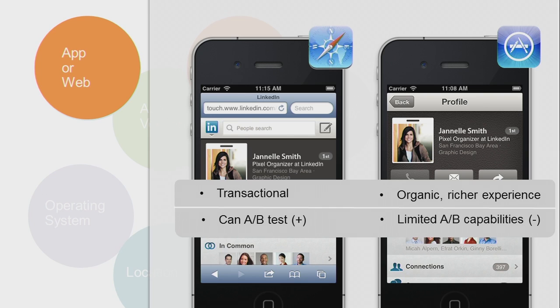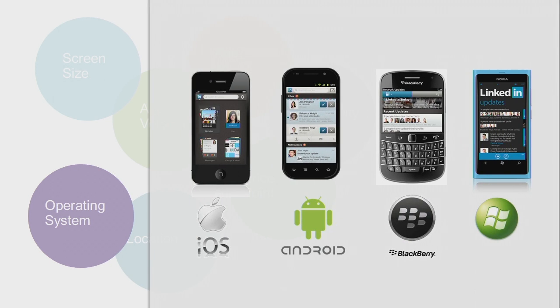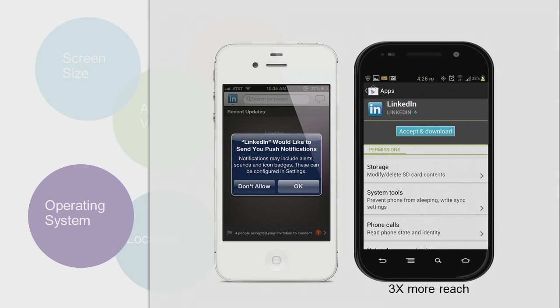A-B testing — you can A-B test to your heart's delight on websites, and we all do that. On apps, it's limited. Let's look at operating systems. We have a variety of apps on different operating systems, and that really impacts the behavior of the users. For example, when we launched push notifications, we saw a significant difference between iOS and Android. To opt into push notifications on iOS, you have to answer a specific question — yes or no. On Android, it's buried in a lot of other questions asked at the point of installation. This small difference causes a 3x difference in the number of people opted into push notifications. So operating system matters.